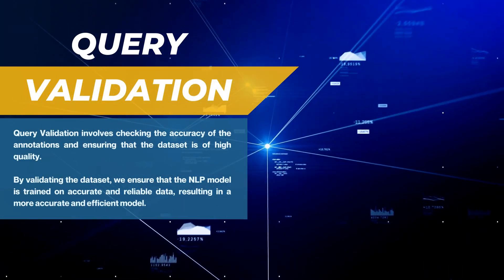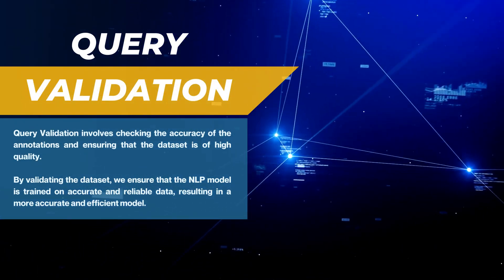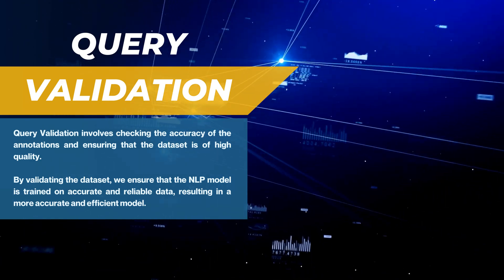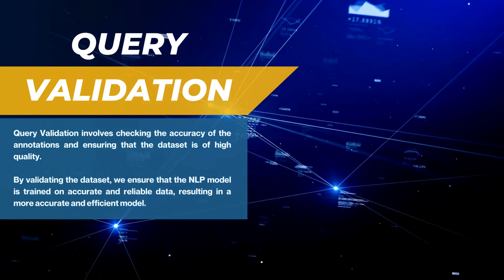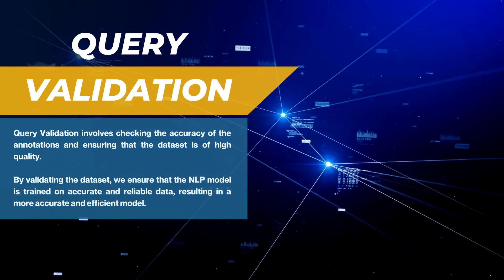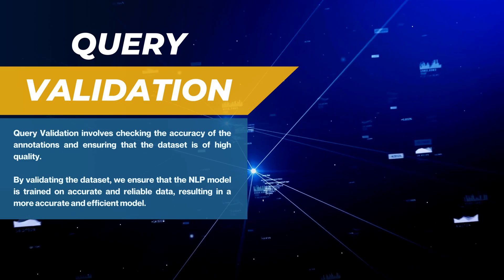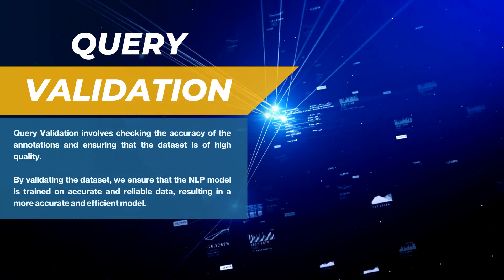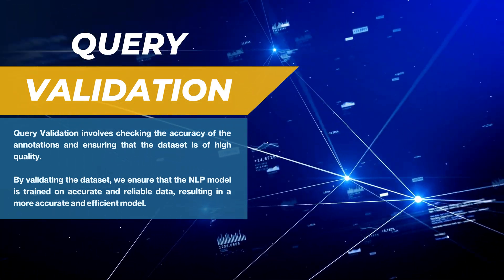Finally, query validation is the last step in the process of training an NLP model for a home automation device. This step involves checking the accuracy of the annotations and ensuring that the dataset is of high quality. By validating the dataset, we ensure that the NLP model is trained on accurate and reliable data, resulting in a more accurate and efficient model.